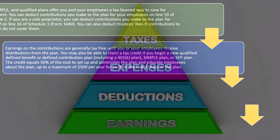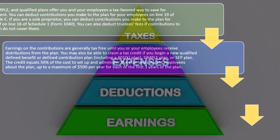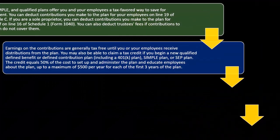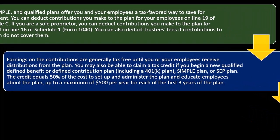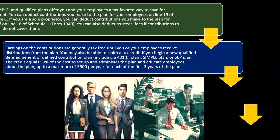You may also be able to claim a tax credit if you begin a new qualified defined benefit or defined contribution plan, including a 401k plan, SIMPLE plan, or SEP plan. The credit equals 50% of the cost to set up and administer the plan and educate employees about it, up to a maximum of $500 per year for each of the first three years of the plan.